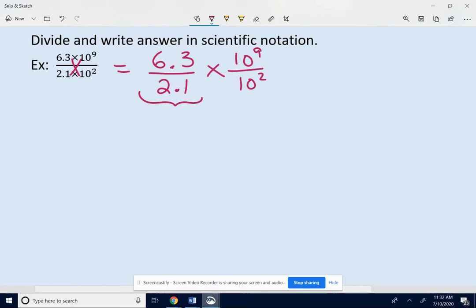6.3 divided by 2.1. Make that a whole number by moving the decimal points over 1 to the right. It looks like 21 goes into 63 exactly 3 times. So 6.3 divided by 2.1 is 3.